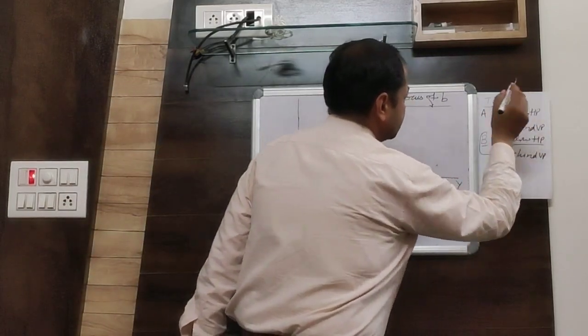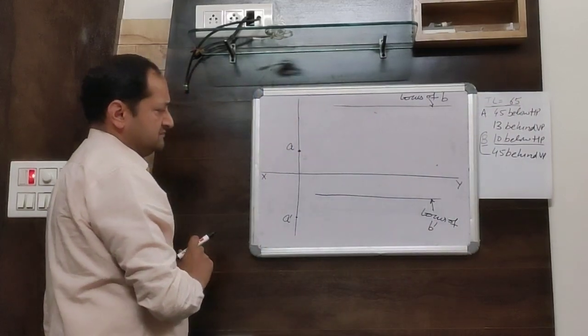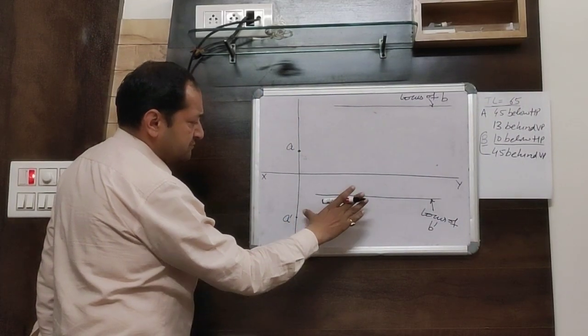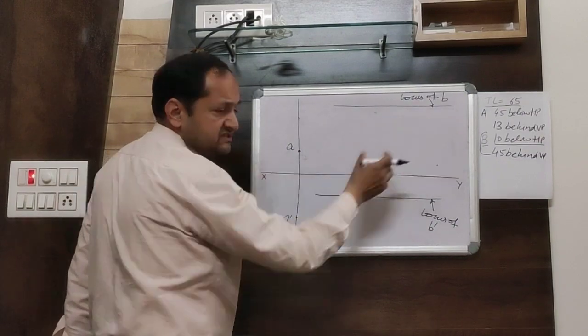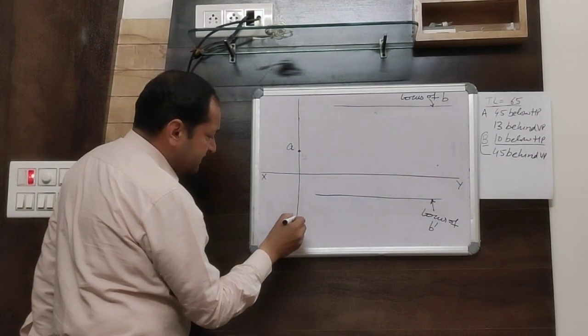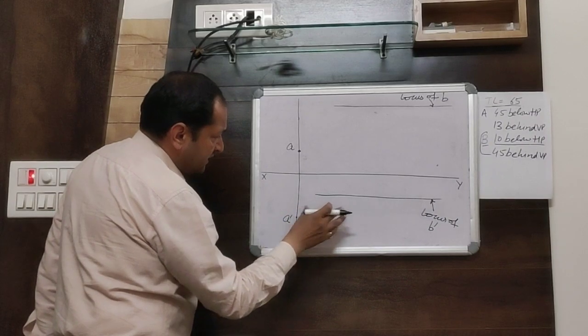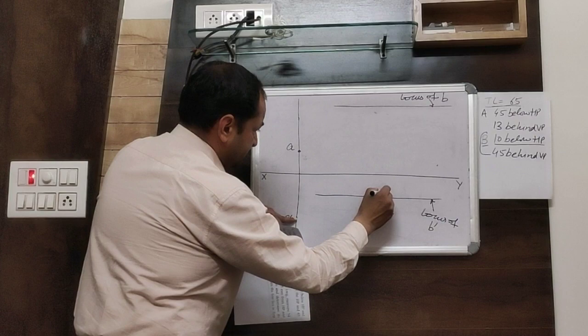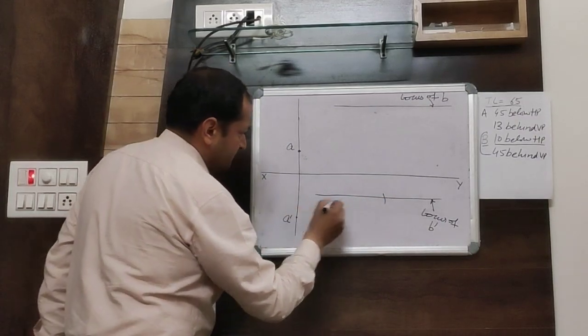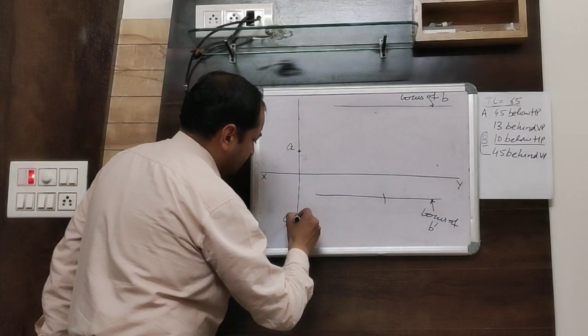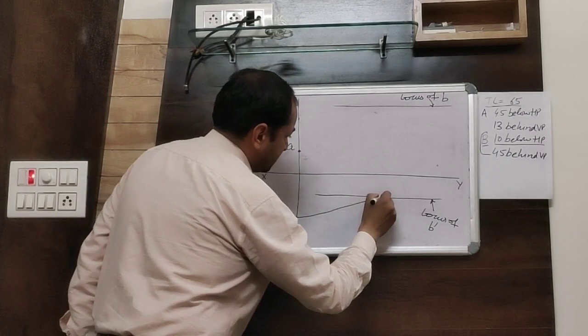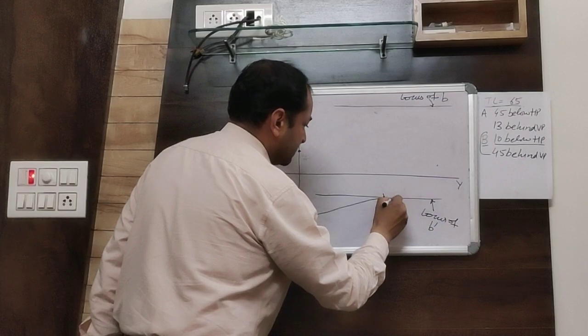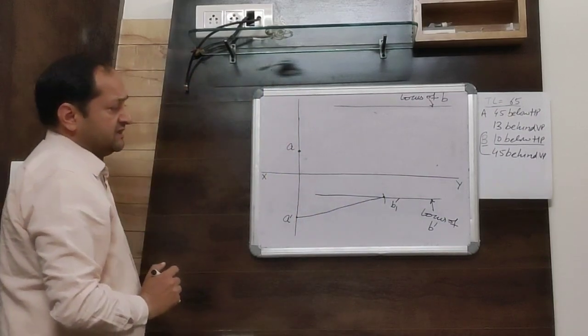Then, the true length of the line is given, 65mm. Taking A dash as center with 65mm radius, mark an arc and join this point with A dash. Take this point as B1 dash.